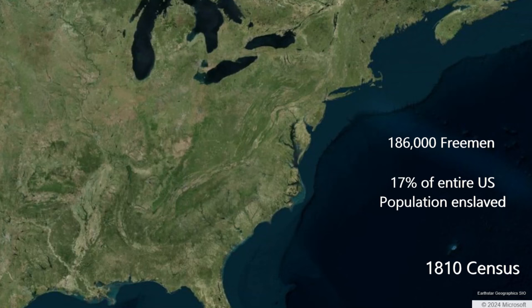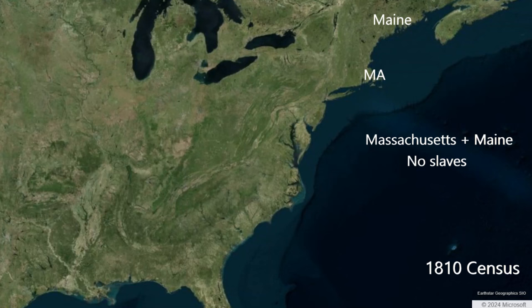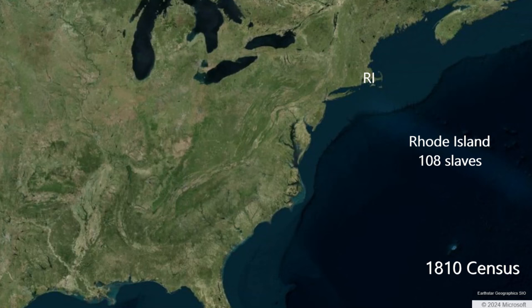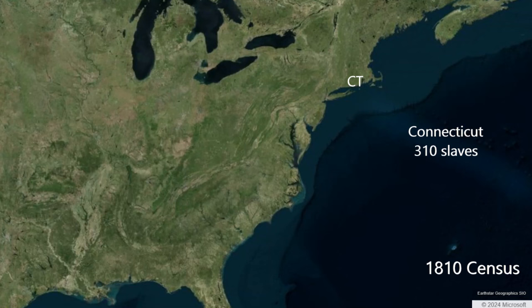Massachusetts and its District of Maine have no slaves. In 1810, there are 7,700 free African Americans in Massachusetts and the District of Maine. Likewise, New Hampshire and Vermont have no slaves in 1810. Rhode Island has nearly abolished slavery, with 108 slaves remaining. There were 3,600 free African Americans in Rhode Island. Connecticut had nearly ended slavery by 1810, with 310 slaves remaining — a reduction of two-thirds in 10 years. There were 6,500 free African Americans in Connecticut.